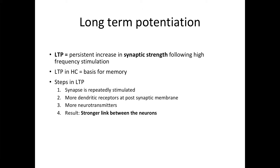There are four important steps in LTP. First, a synapse needs to be repeatedly stimulated, and due to this repeated stimulation it will put more dendritic receptors in the postsynaptic membrane. Then signals will travel back across the synapse to stimulate the presynaptic cell to release more neurotransmitters. All of this makes the synapse stronger and more likely to be activated in the future.